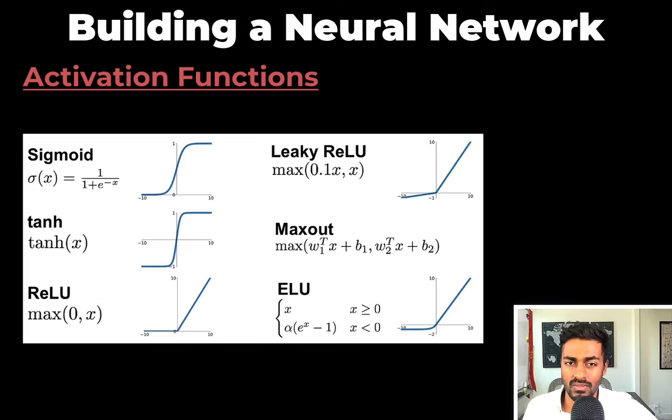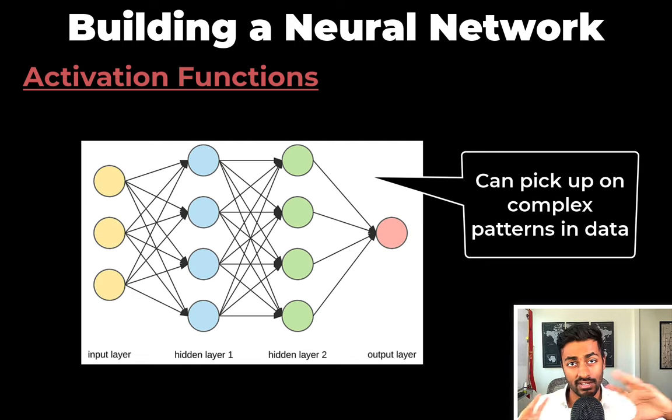So why do we need activation functions? It's so that the neuron, and also hence the neural network, can pick up on complex patterns in data. And that's how neural networks can solve complex tasks.